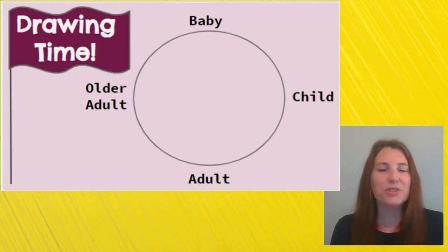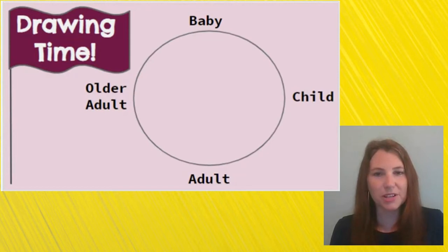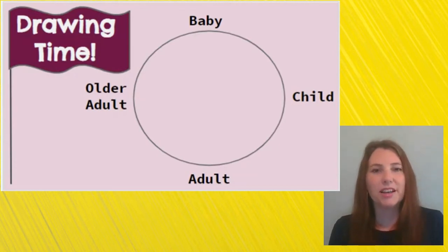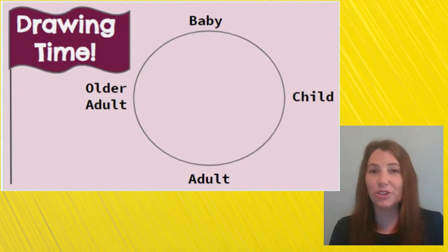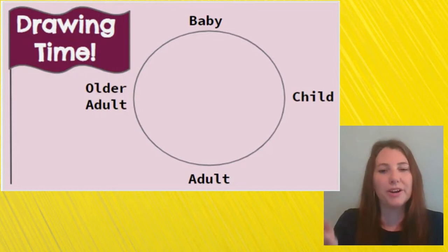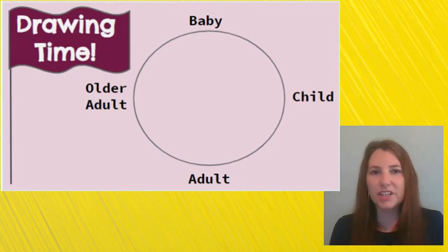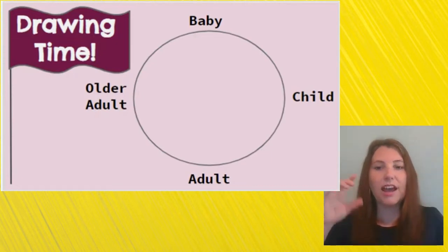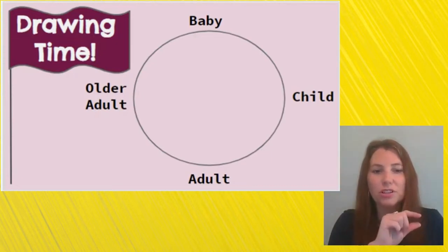Now it's time for you to do something. I want you to draw a human life cycle — specifically you. Think about what you looked like when you were a little bitty baby. Now think about what you look like now as a child. What do you think you might look like when you get to be an adult? How do you think you'll change? And what do you think you'll look like when you're a really old adult? A lot of times we draw cycles in a circle shape to show that they keep going around and around. In just a moment, I want you to pause this video and go get some paper and something to draw or color with. I want you to draw a big circle in the middle, and in the four places around the circle, draw yourself at those stages.